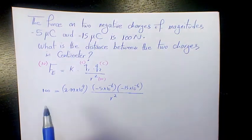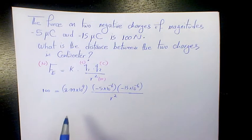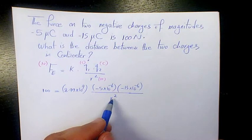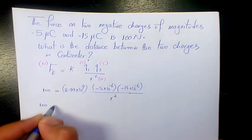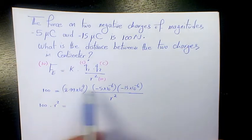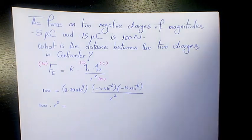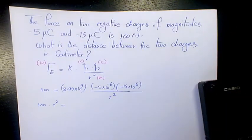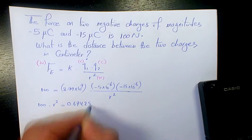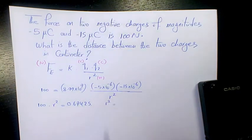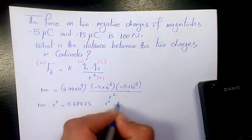In order to solve it, we need to do cross multiplication. R squared times 100 equals the multiplication of these three numbers, which will be 0.67425. So R squared is 0.67425 divided by 100, which is 6.7425 times 10 to the power of -3.